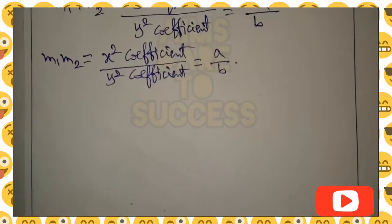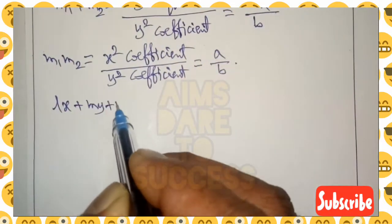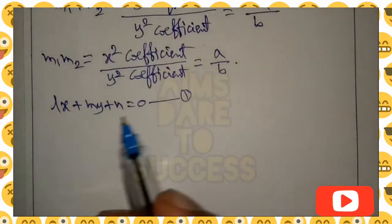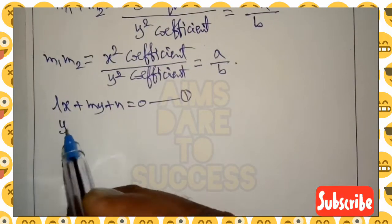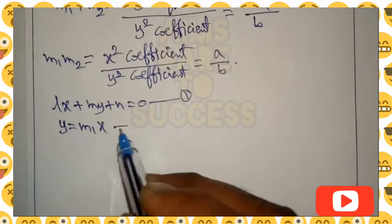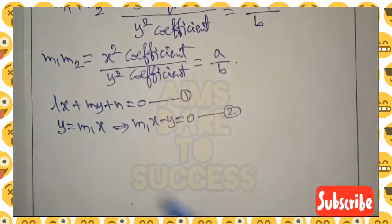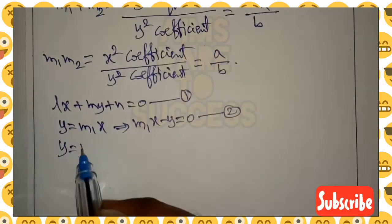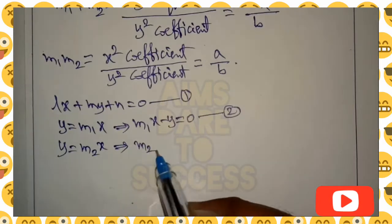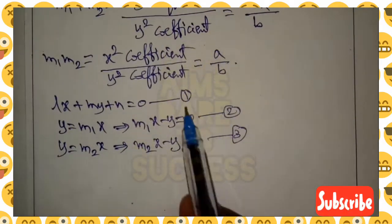Next, according to the question, lx + my + n = 0 is equation 1. The pair of lines: y = m1·x, bringing y to the right side gives m1·x − y = 0, which is equation 2. And y = m2·x, bringing y to the right side gives m2·x − y = 0, which is equation 3.